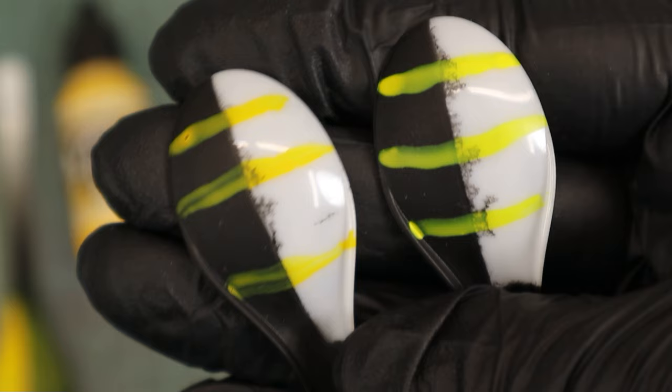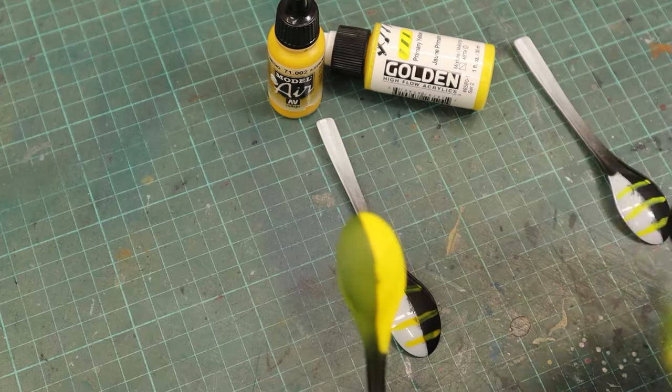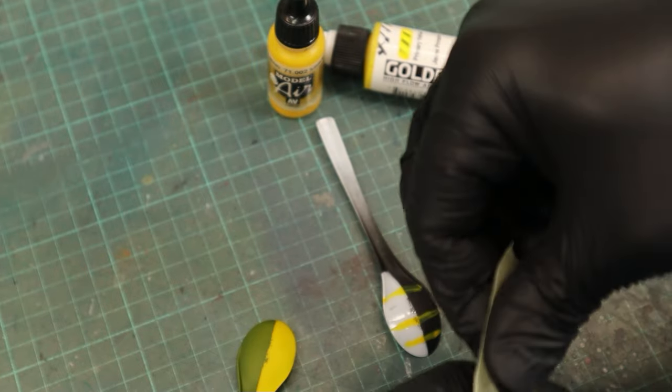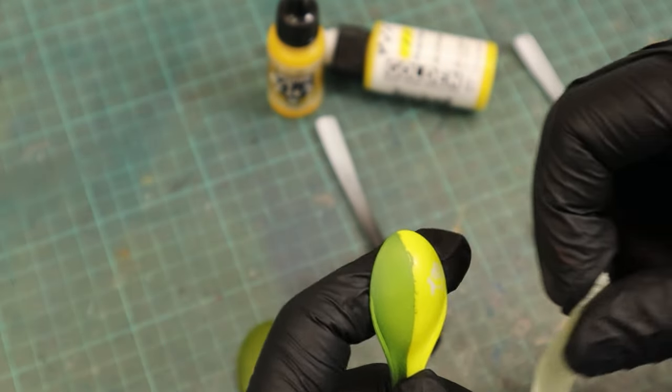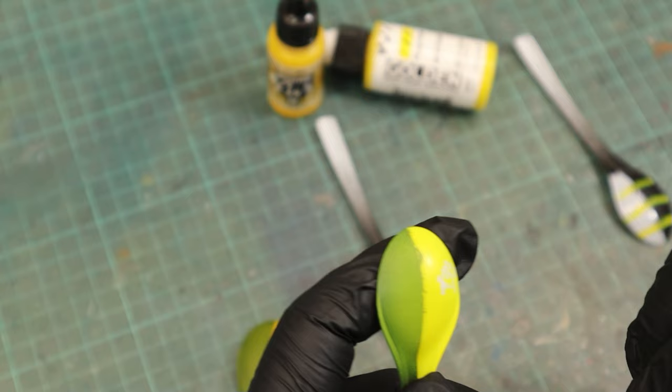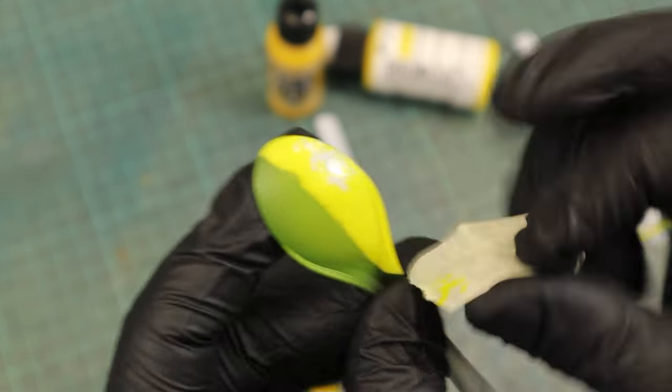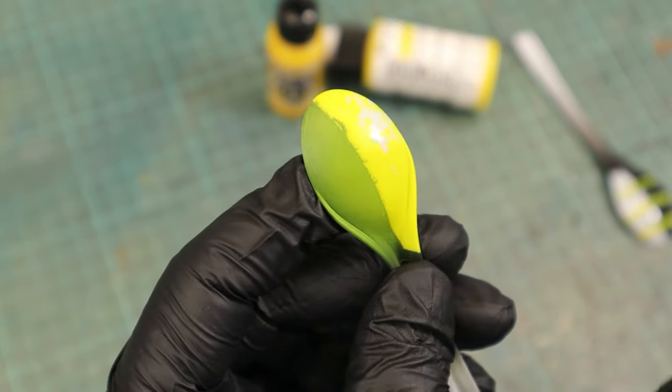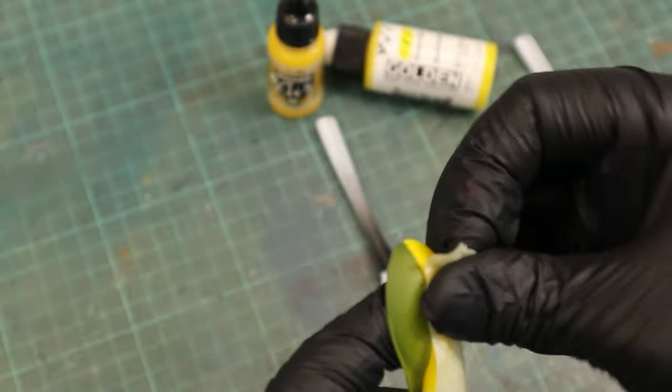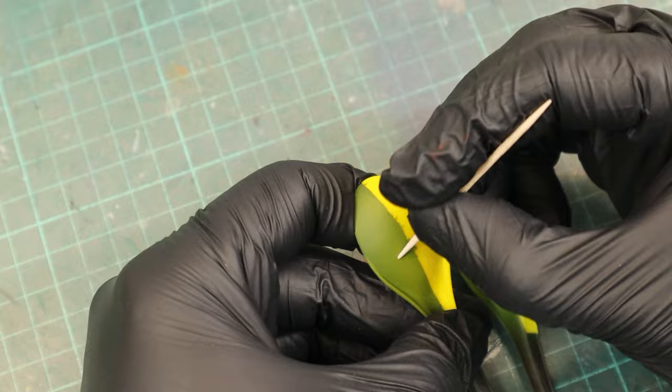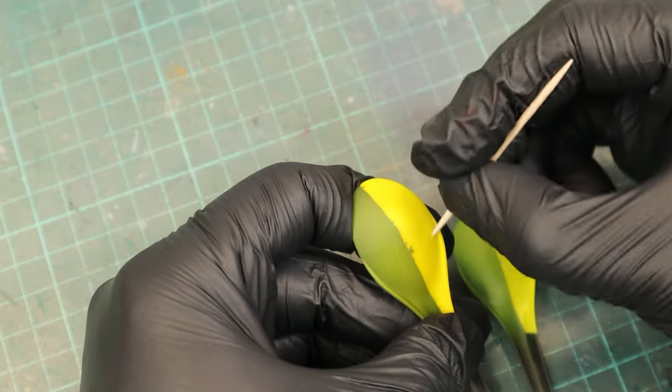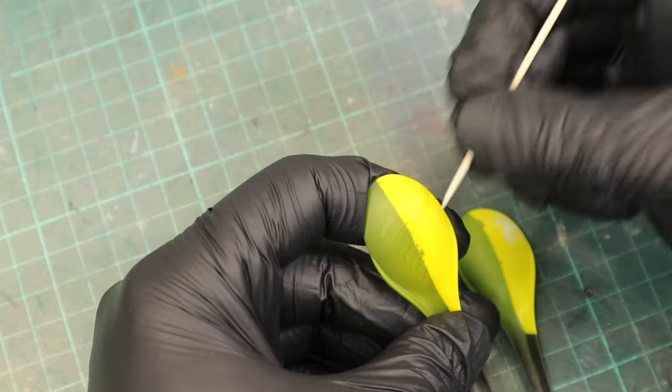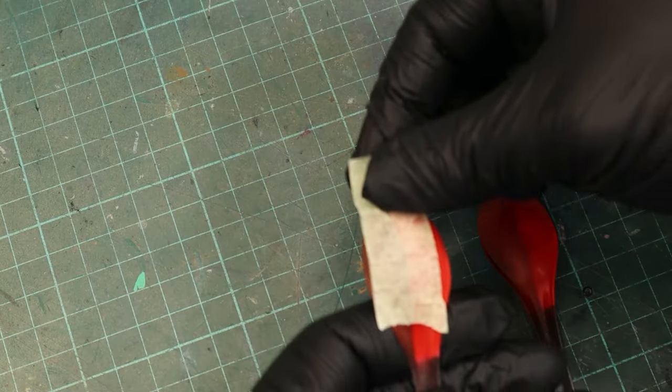Now on to the durability test. First I just hit the spoons against each other, but that didn't do anything to either of them. Then I did a masking rip off test that shows how good the paints adhere to the surface. And here it showed that the golden acrylics have a problem adhering to the raw plastic surface. Which to be fair is extremely smooth, but the Vallejo colors didn't have this problem. Then I tried scratching both with a toothpick, where the result was pretty much the same for both of them. And here is the proof that I didn't go easy on the paints.